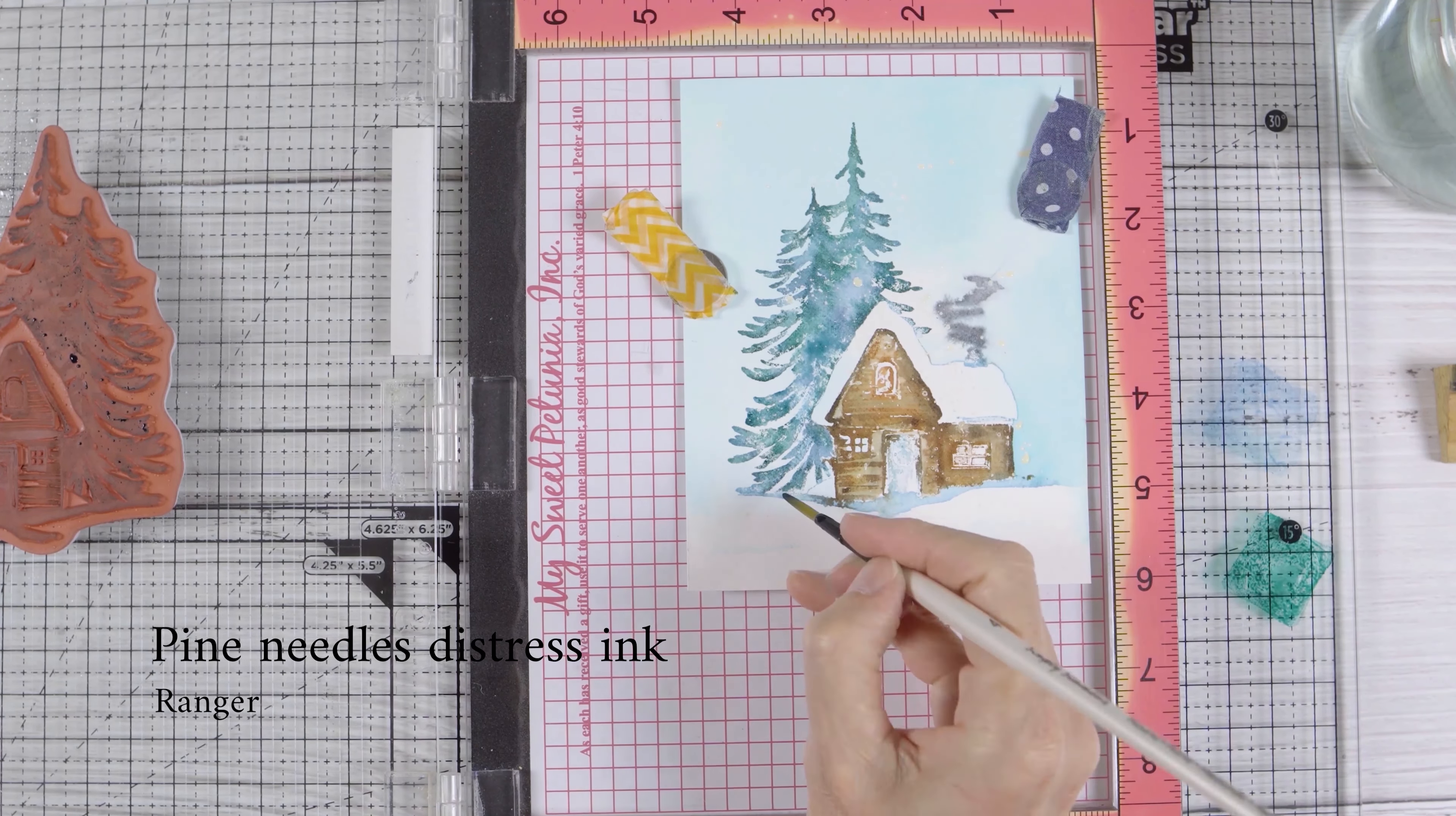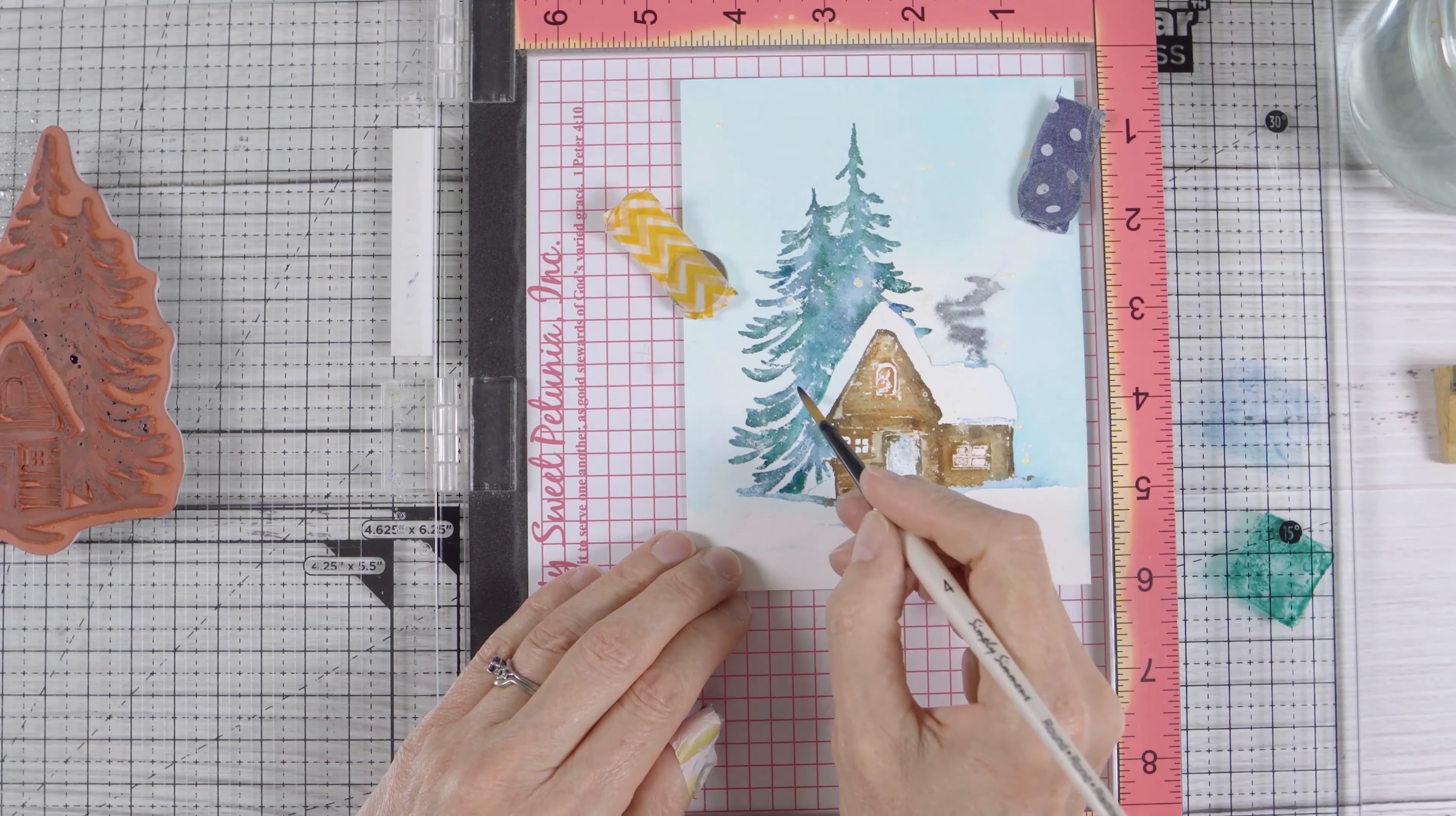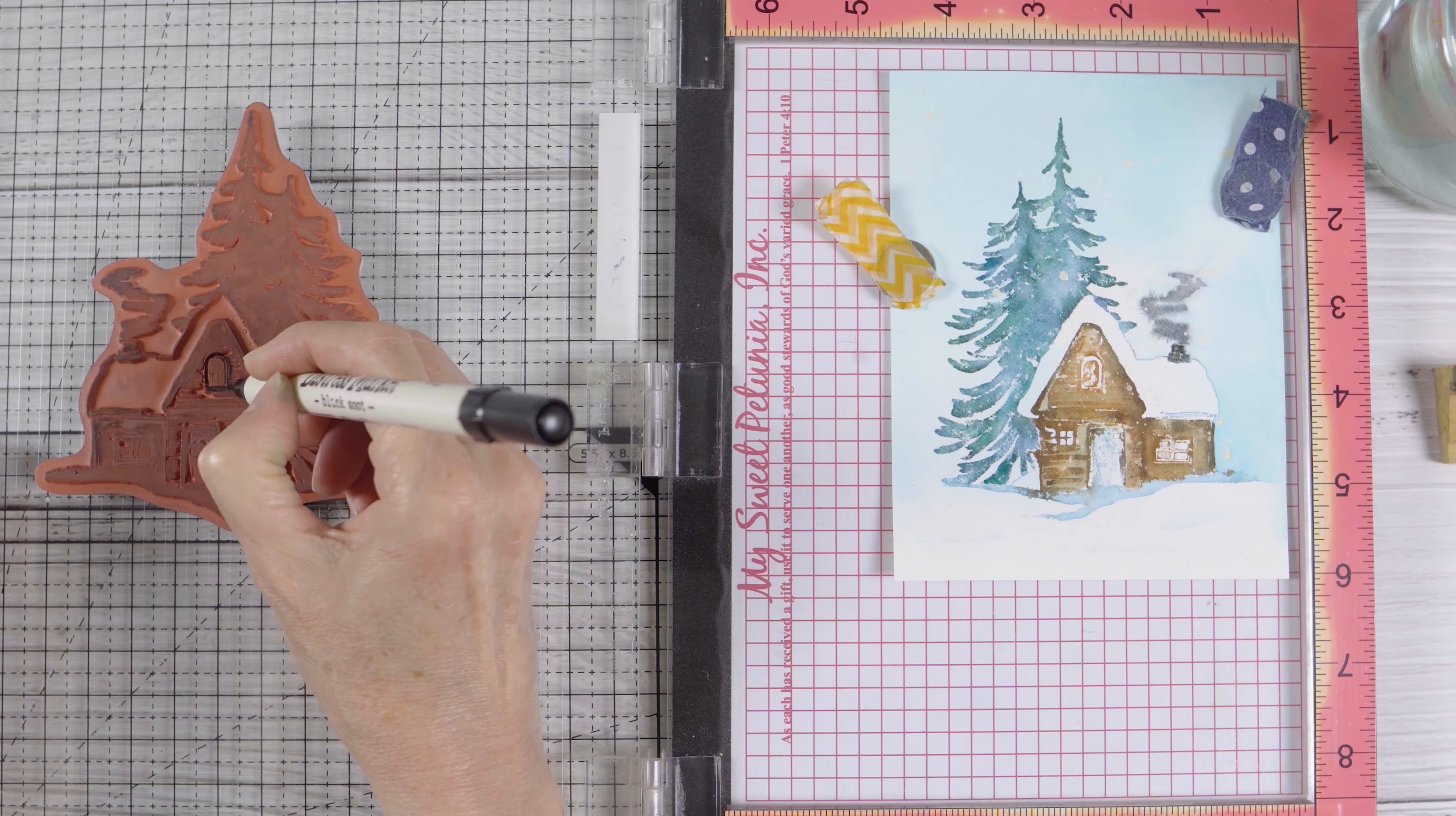Now I'm adding extra pine needles both by stamping it and by picking it up with a brush. While that's been happening, my cottage stamping and inking has been drying. So I can go back to that, just a little bit of definition on the chimney first with black soot marker, and now a bit of definition around all the little windows and around the doorway.